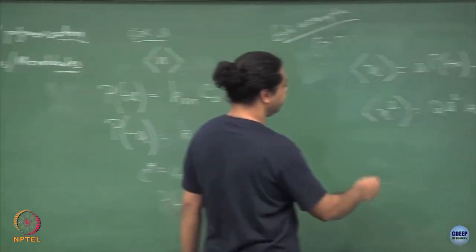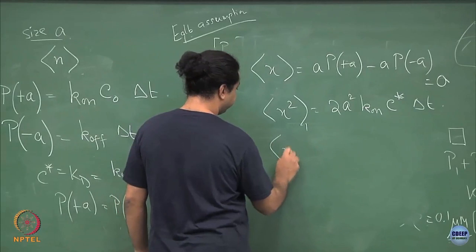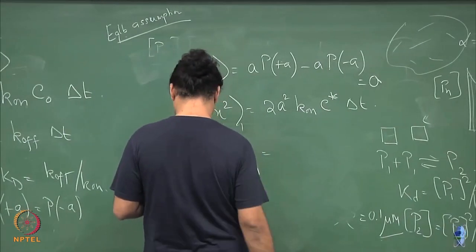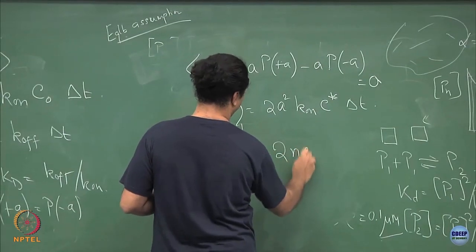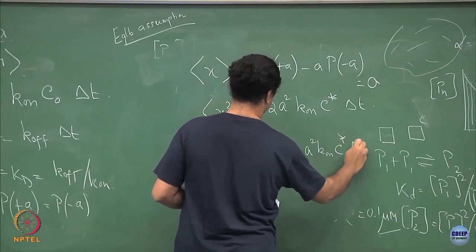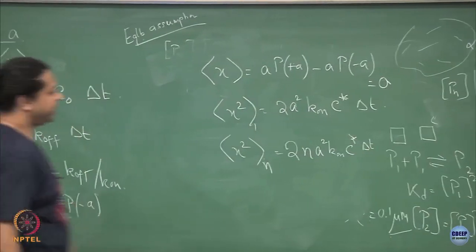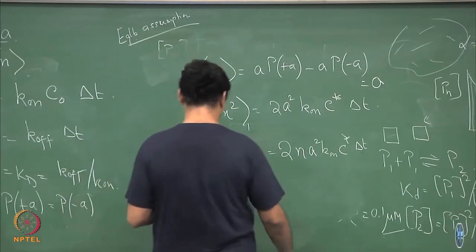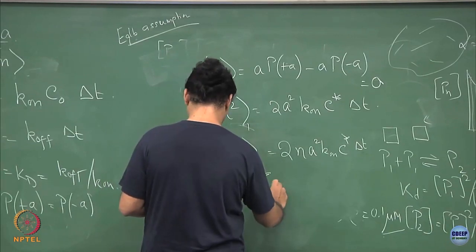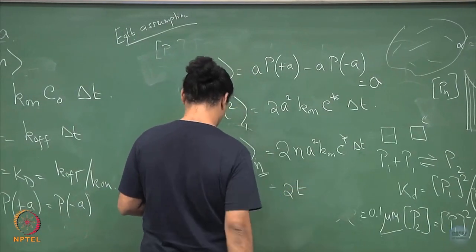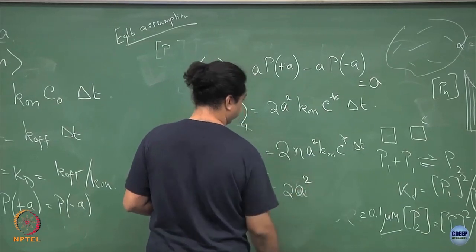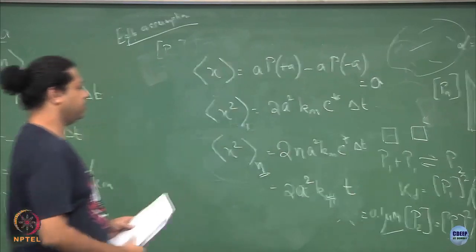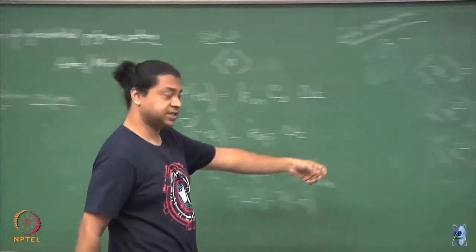This is for a single step. If I took n such steps — I have a polymer of length n — that is nothing but 2n a² k_on c* delta_t. But if each step takes a time delta_t, then n delta_t is the total time taken to sample this n. So this is like 2a² k_on c* t, or just 2a² k_off times t. This is a simple random walk where x-squared grows as t.